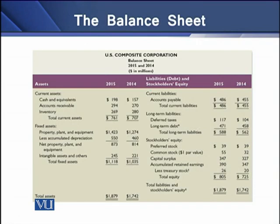On the screen you can see a balance sheet. This balance sheet has two sides. Assets are listed on the left-hand side, and liabilities and stockholders equity are listed on the right-hand side. On the asset side there are two broad categories: current assets, comprised of cash and equivalents, accounts receivable, and inventory; and fixed assets, comprising of property, plant and equipment, and intangible assets. A firm may have both intangible and tangible assets.